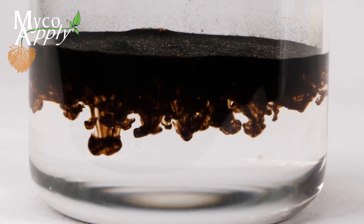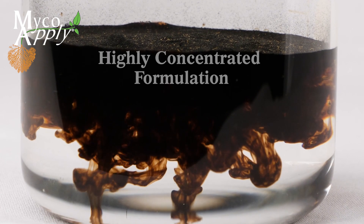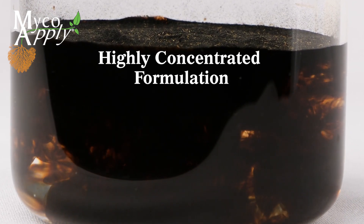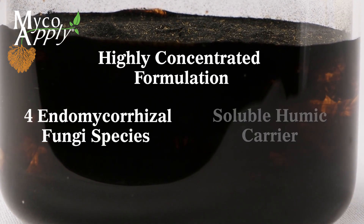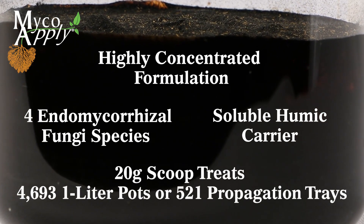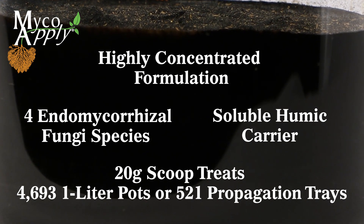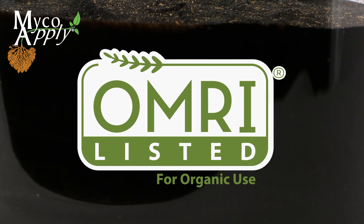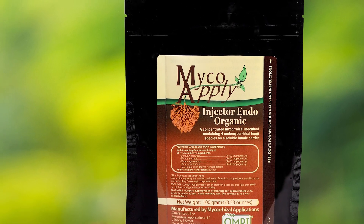The specific advantages of MycoApply Injector Endo include: it is a highly concentrated formulation containing a diverse and effective selection of four endomycorrhizal fungi species; it features a soluble humic carrier; one 20-gram scoop treats up to 4,693 pots or 521 trays; it is OMRI listed for organic use; and it is available in 100-gram bags.